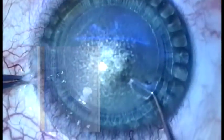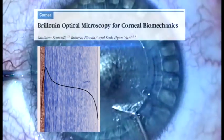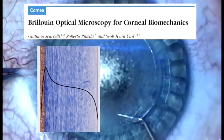The small incision preserves more lamellae within the anterior stroma, which is stronger than the mid and posterior stroma, as demonstrated by Brillouin Optical Microscopy Studies.